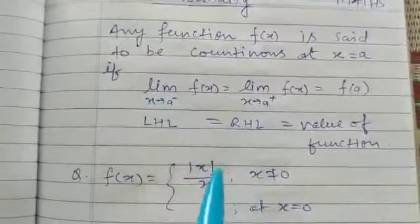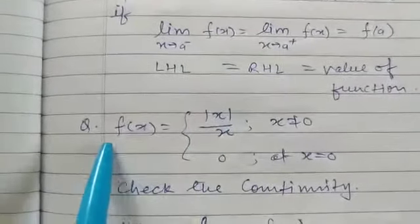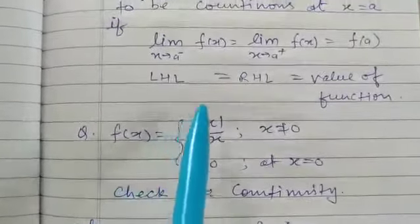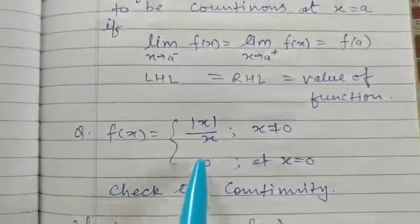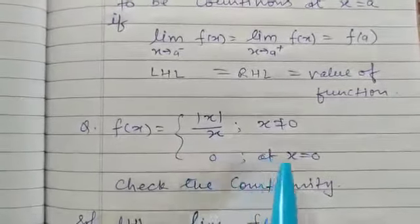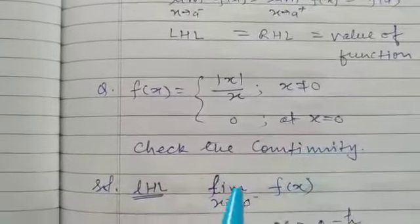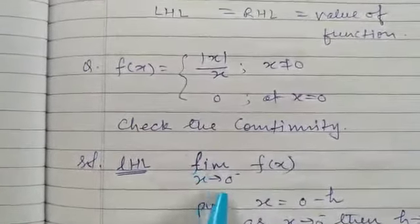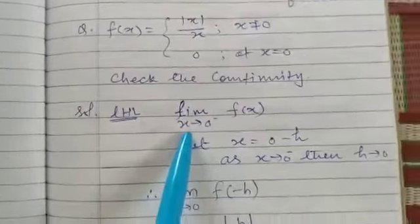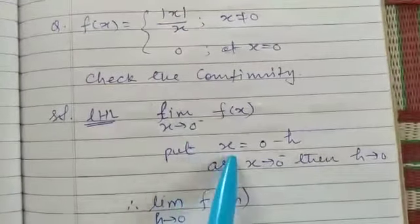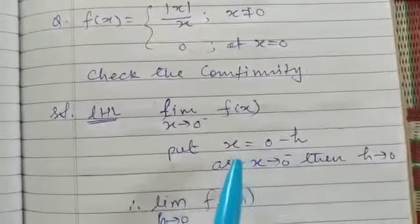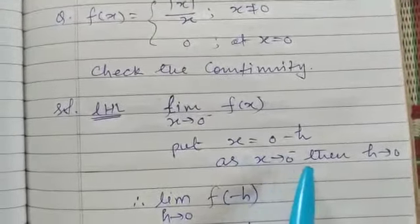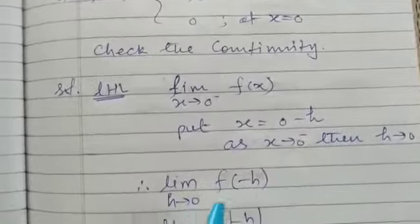Now taking some examples. This is the question: f(x) equal to mod x upon x, and we have to check the continuity of this function at x equal to 0. So here is the procedure. First we have to find LHL. So limit x tends to 0 negative f(x). Now we have to make this limit as 0, so put x equal to 0 minus h. As x tends to 0 negative, then h tends to 0.